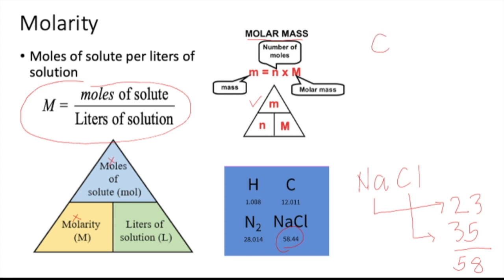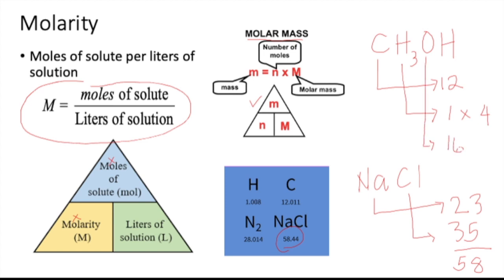For a compound with multipliers, for example CH3OH (methanol): carbon is 12, hydrogen is approximately 1, and there are four hydrogen atoms (three plus one), and oxygen is 16. Adding everything together, the molar mass of methanol is approximately 32 grams per mole.